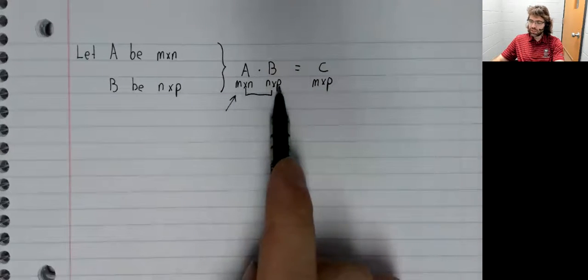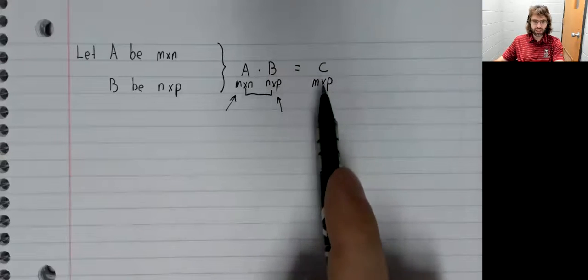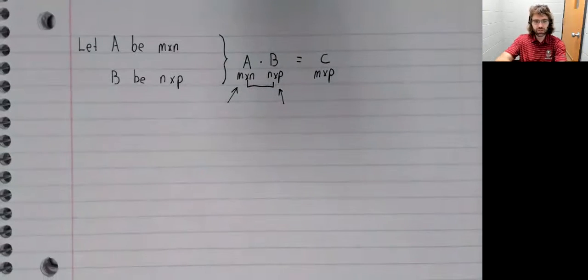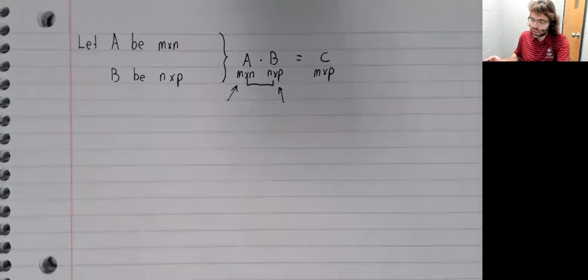The product of two matrices is a matrix, and these dimensions together give the dimension of this matrix.